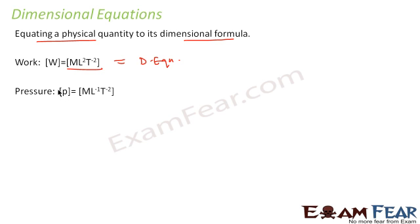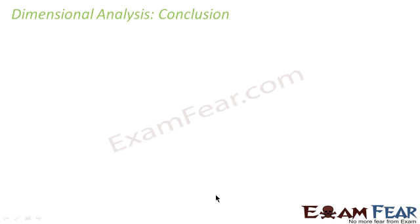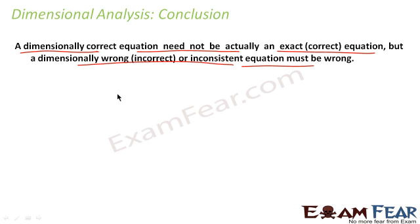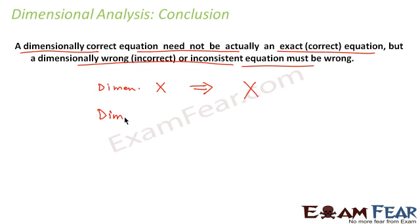The conclusion of dimensional analysis is that a dimensionally correct equation need not be actually correct or exact, because sometimes constants are also involved. However, a dimensionally incorrect equation must always be wrong. So a dimensionally incorrect equation is always incorrect, but a dimensionally correct equation is not always correct.